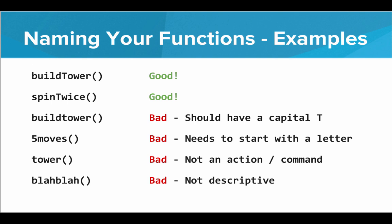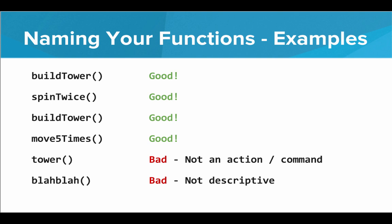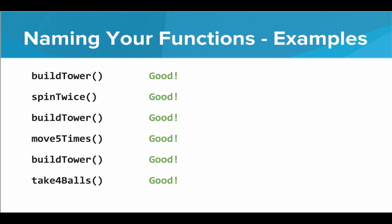What about build tower with a lowercase t? Well, it's a good action verb and it's descriptive, but it's bad because that T should be capital — Tower is a new word, we need lower camel case, so that T should actually be capital. Now it's good. How about fiveMoves? That one's bad because a function name cannot start with a number. So instead of fiveMoves, let's call it moveFiveTimes. How about just tower? That one's not a good name because it's not an action or a command — we can't tell Carol to tower, but we can tell Carol to buildTower. And the last one, blah blah — that's bad because it's not descriptive. Instead, let's give it a nice descriptive name like takeFourBalls. So these are all good names for functions.